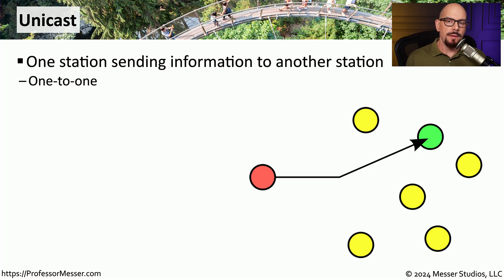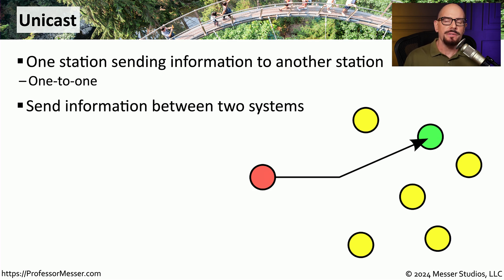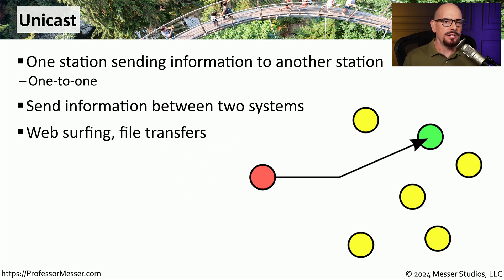A unicast is one of the more popular ways of sending information across the network. It is when one station sends information directly to another station. This is a one-to-one relationship, and nothing within that conversation is ever sent to anyone else on the network. So anytime you're connecting to a website, you're transferring files, or you're checking your email, it's probably all taking place with a unicast communication.